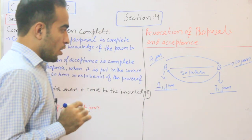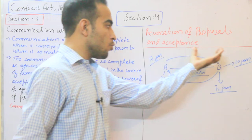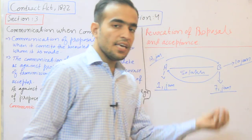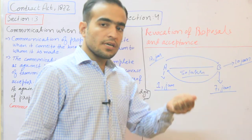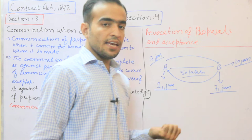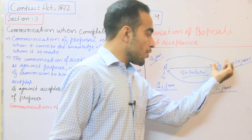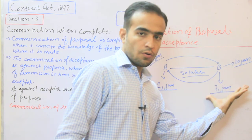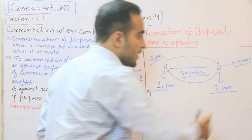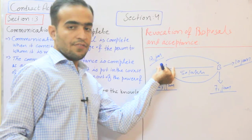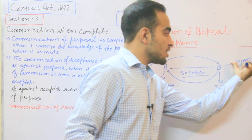B نے A کا offer accept کیا اور B نے 10 January کو acceptance کا letter post کیا۔ وہ letter A نے 17 January کو receive کیا۔ تو A کا جو proposal ہے وہ B کو communicate ہوا 7 January کو — جیسے ہی B کو پتا چلا کہ A اسے 50 لاکھ میں گھر بیچنا چاہتا ہے۔ اور B کا acceptance complete ہو جاتا ہے A کے خلاف جیسے ہی B نے letter post کیا 10 January کو۔